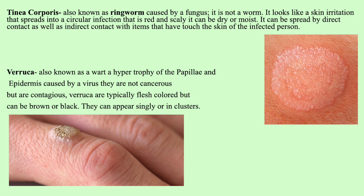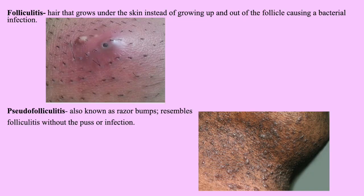Tinea is a fungal infection. Tinea pedis is athlete's foot, treatable with antifungal topical powders, sprays, or creams. Tinea corporis, also known as ringworm, is caused by a fungus — not a worm. It spreads into a circular, red, scaly infection that can be dry or moist and can spread by direct or indirect contact. A verruca, also known as a wart, is a hypertrophy of the papillae and epidermis caused by a virus. Warts are not cancerous but are contagious, typically flesh-colored though can be brown or black, and can appear singly or in clusters. Folliculitis occurs when hair grows under the skin instead of out of the follicle, causing a bacterial infection. Pseudofolliculitis, also known as razor bumps, resembles folliculitis but without pus.